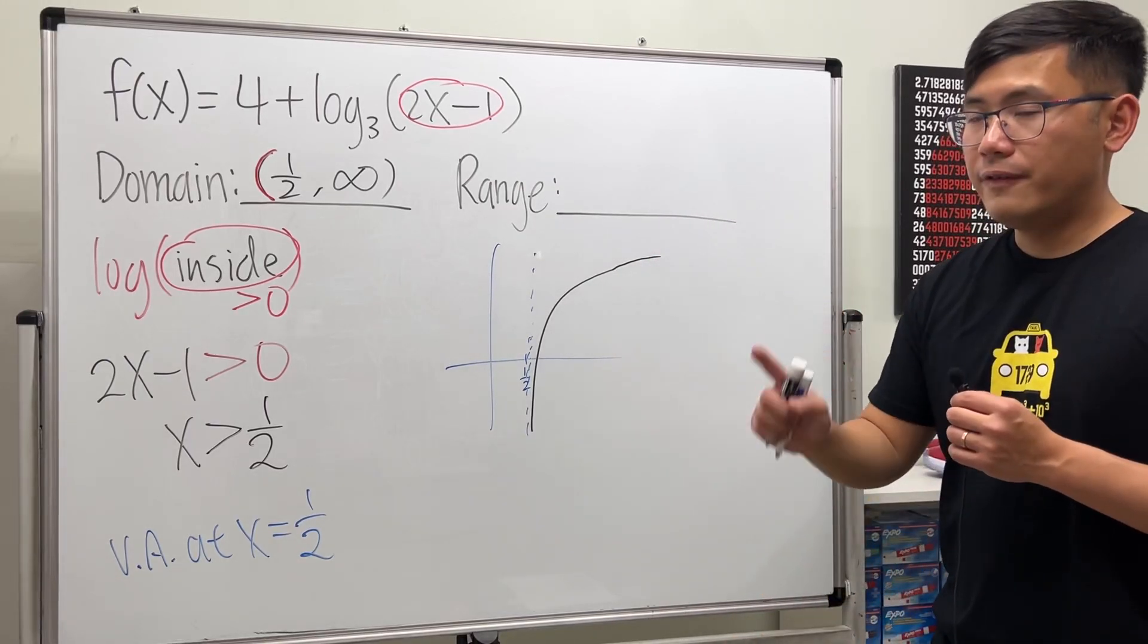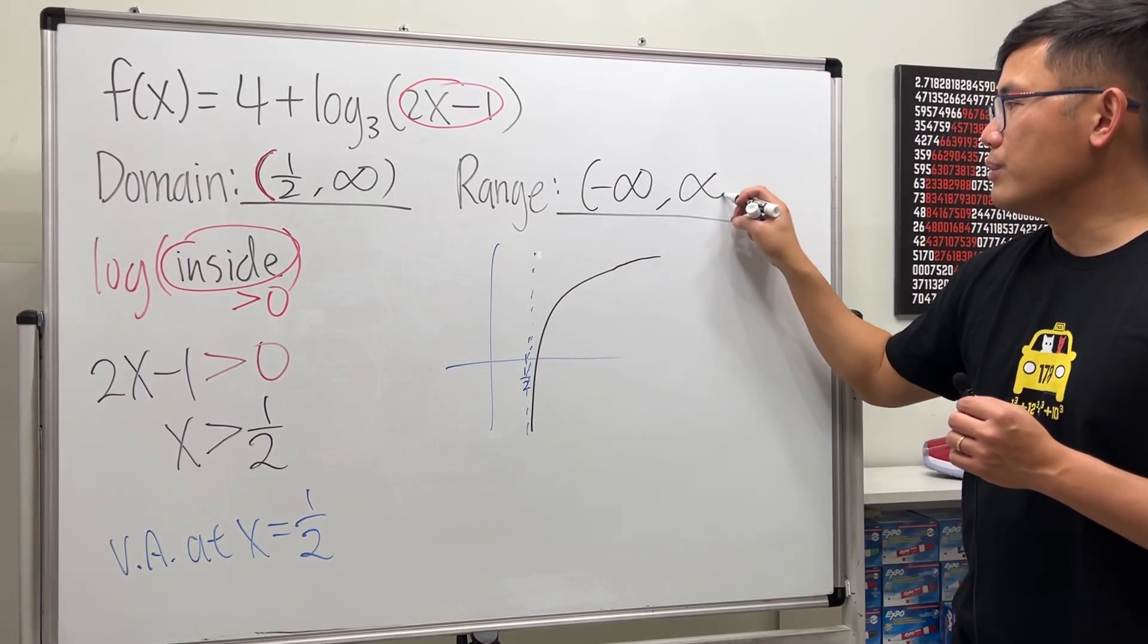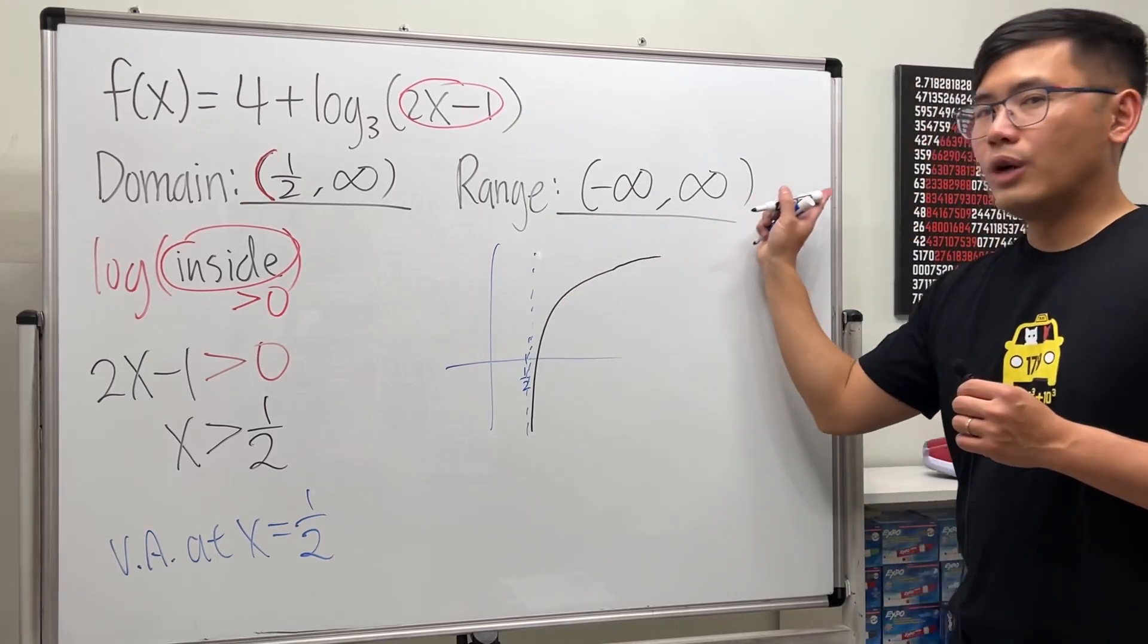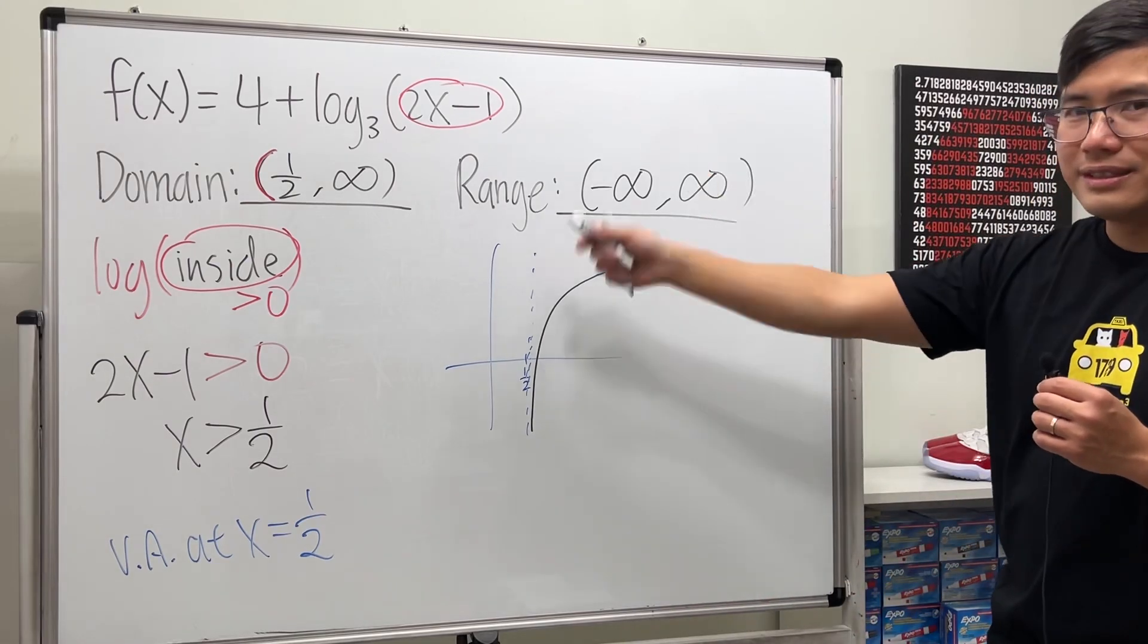Therefore the range for this is just negative infinity to positive infinity, because this part keeps going straight down and this right here will go up slowly but still go to infinity. That's it.